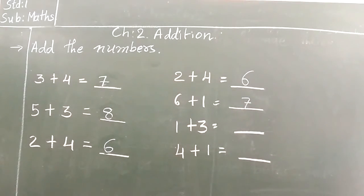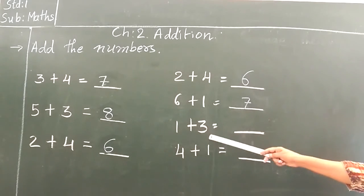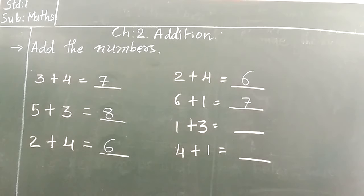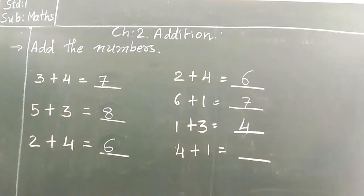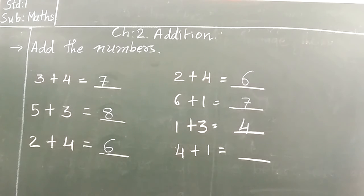Now 1 plus 3. See 1 plus 3. So what we have to do? We have to take 1 in left hand and 3 in right hand. Now we have to count it together. 1, 2, 3, 4. So what do we write here? Number 4.